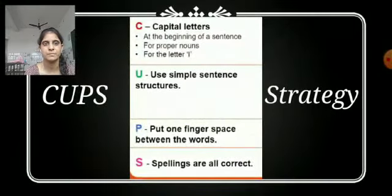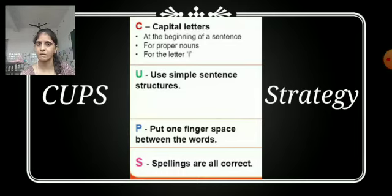Next is CUPS. Where C stands for capital letters. Where to write capital letters? At the beginning of a sentence. At the beginning of any sentence, we write the first letter capital. For proper nouns, we write the first letter of proper noun as well. For the letter I. If you are writing the letter I alone, whether you are writing it at the starting of the sentence, middle or at the end, doesn't matter. You will have to write I capital. But make sure it's alone there. Then next is U, use simple sentence structures, as I told you earlier.